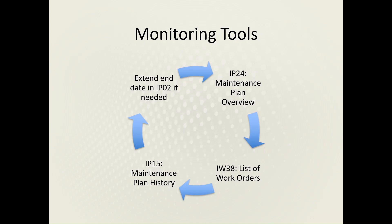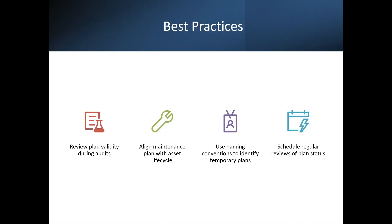There are several monitoring tools available. Transaction ip24 is used to get an overview of maintenance plans. Transaction iw38 is used to check the list of all available work orders. Transaction ip15 is used to check maintenance plan histories. Transaction ip02 can be used to extend the end date if you are unable to complete maintenance within the due time.